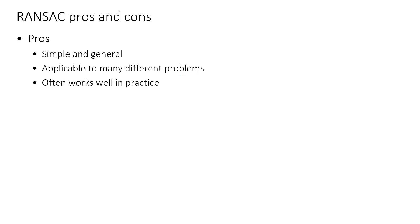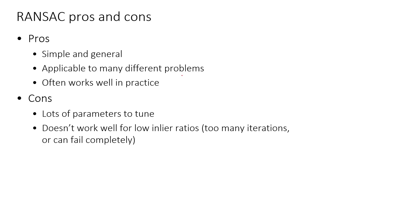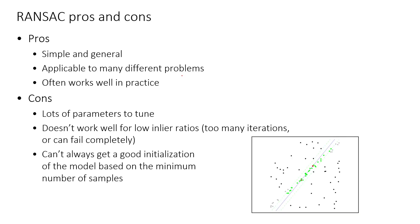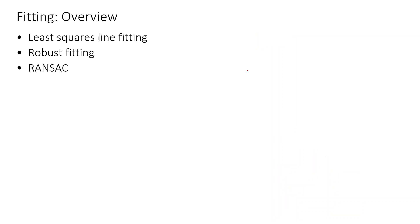RANSAC pros: it is simple and general, applicable to many different problems, and often works well in practice. Cons: lots of parameters, doesn't work well for low inlier ratios since too many iterations are needed, and can't always get a good initialization from the minimum number of samples. There is a great improvement of RANSAC called MLESAC — if you know about this, there is no reason to use plain RANSAC. We have now covered least squares line fitting, robustifying, and RANSAC.